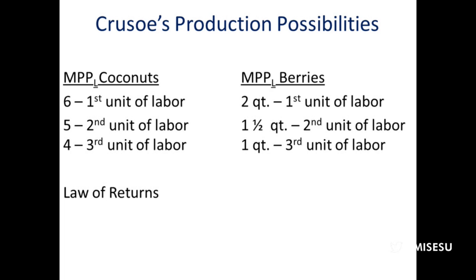Every production process reaches a point of diminishing returns because there's a finite productive capacity of the complementary factors combined with the variable factor — adding more and more labor to a fixed set of complementary factors. As Caruso produces more coconuts, his marginal physical product goes down, and eventually he'll allocate his labor towards something else. Because the marginal physical product and the marginal utility of coconuts go down as he allocates more labor to coconuts, eventually the marginal value product of berries will be higher ranked than the marginal value product of coconut production.